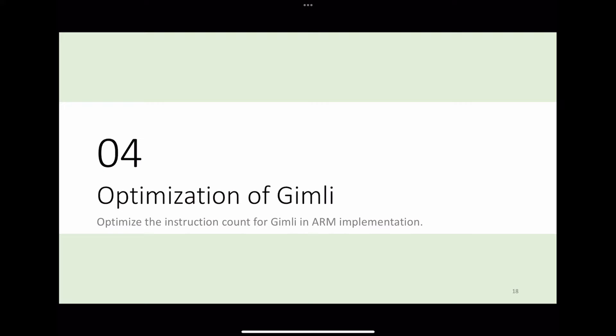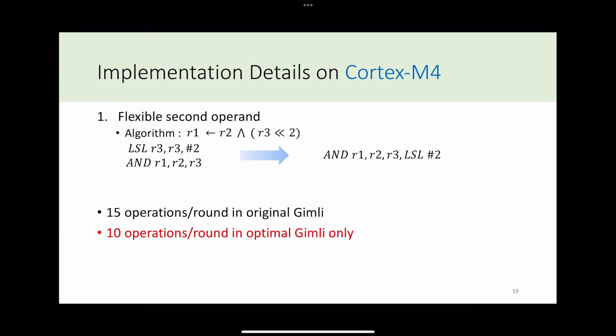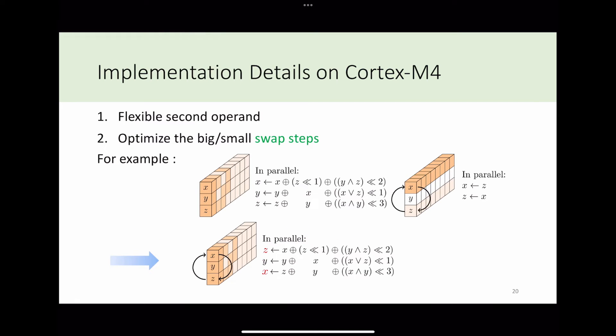To implement a fast and secure Gimli, we discuss the optimization of original Gimli on Cortex-M4 at first. Many ARM general data processing instructions have a flexible second operand. For example, we can execute a barrel shift left with an AND operation in the same cycle. By this method, the operations in each round can be reduced from 15 instructions to 10 instructions. The second technique is optimizing the swap step by well assignment for registers. This feature is about the nonlinear layer of Gimli.